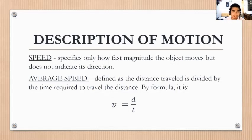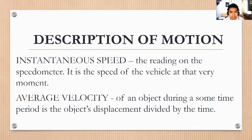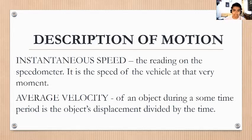Average speed is defined as the distance traveled divided by the time required to travel that distance. By formula: v = d/t. Average speed and average velocity share the same formula: d over t. Instantaneous speed is the reading on the speedometer — it is the speed of the vehicle at that very moment. Average velocity of an object during a time period is the object's displacement divided by the time.